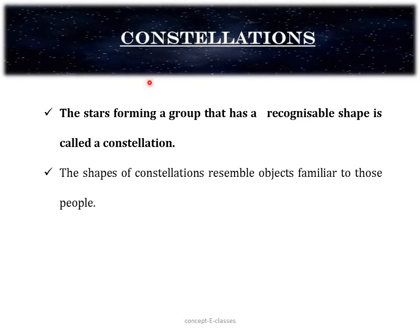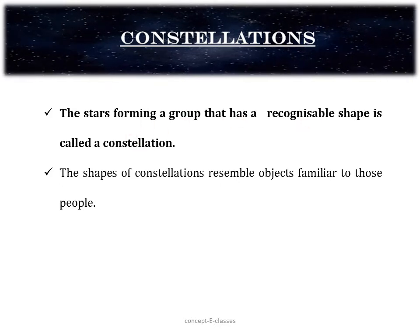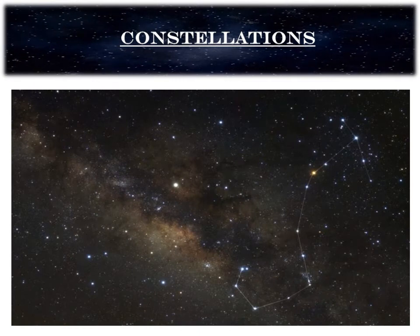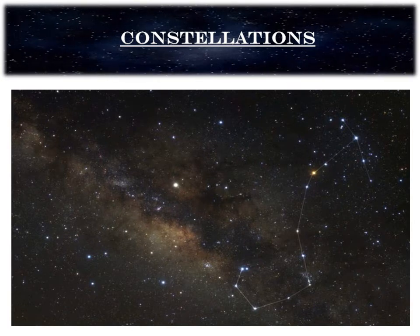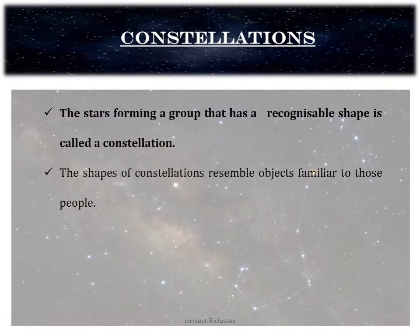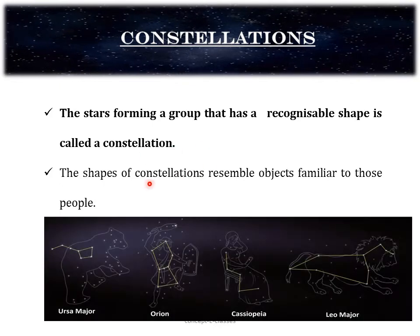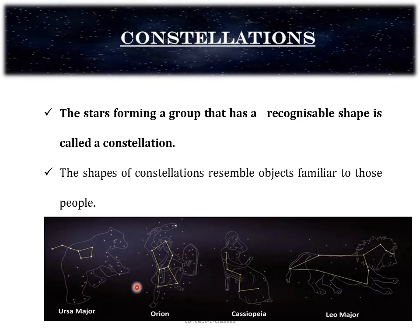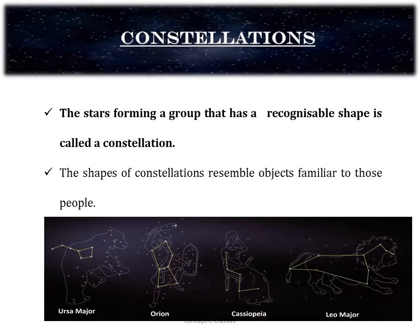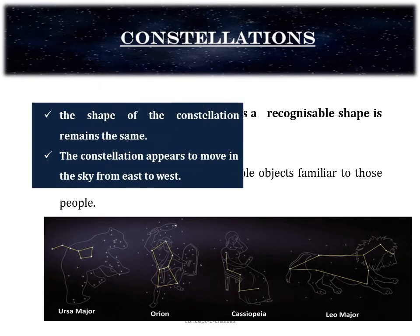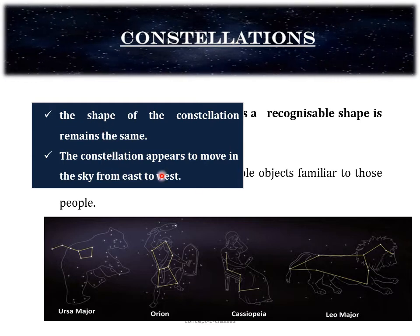The next topic is constellations. A constellation is a group of stars forming a recognizable shape. We can easily identify some constellations in the night sky, but we should first know what a particular constellation looks like and where to look for it. The shape of the constellation resembles objects familiar to people — for example, Ursa Major looks like a spoon, Orion looks like a hunter, and there is also Cassiopeia and Leo Major. The shape of a constellation always remains the same, and it appears to move in the sky from east to west.